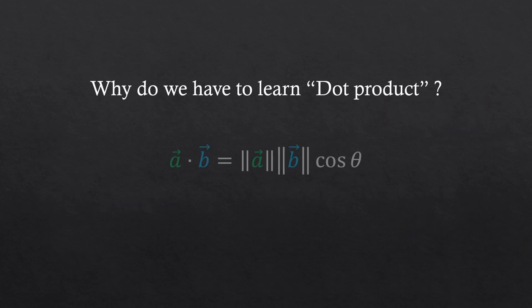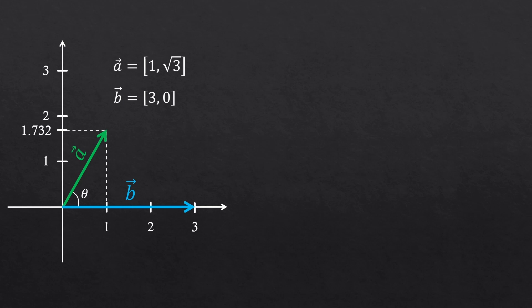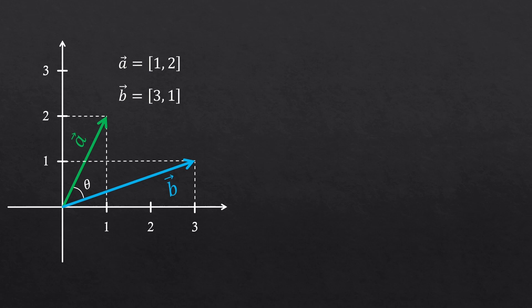So why do we have to learn dot product? What's its use? Let's go back to this. What was the angle between the two vectors? 60 degrees, right? From the special triangle. But we know this angle just because we knew about the special triangle. What if we have this kind of case, where we have no idea what this angle should be? This is where we use dot product. Watch this.